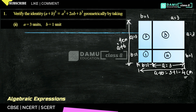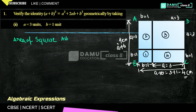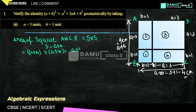Left-hand side: total area of square ABCD. Area of square ABCD equals side into side. Here side will be a plus b, so (a + b) into (a + b) equals (a + b) whole square, which equals 4 whole square, that is 16 centimetre square.